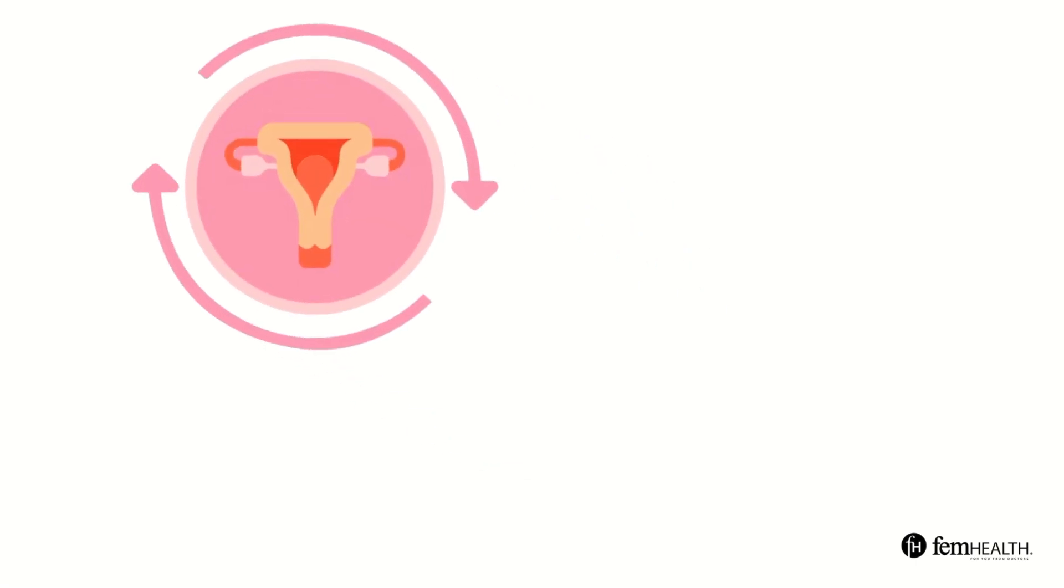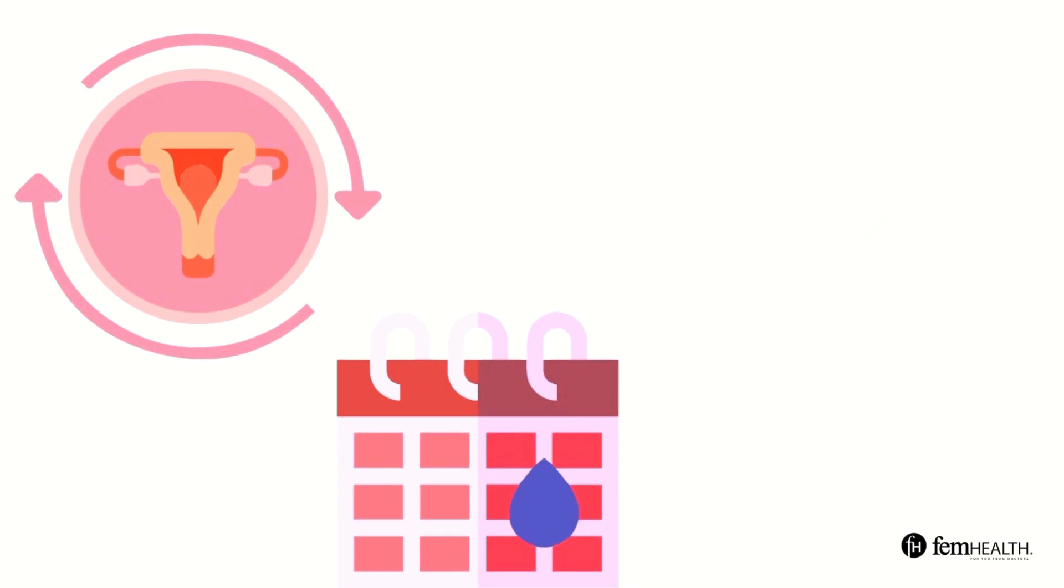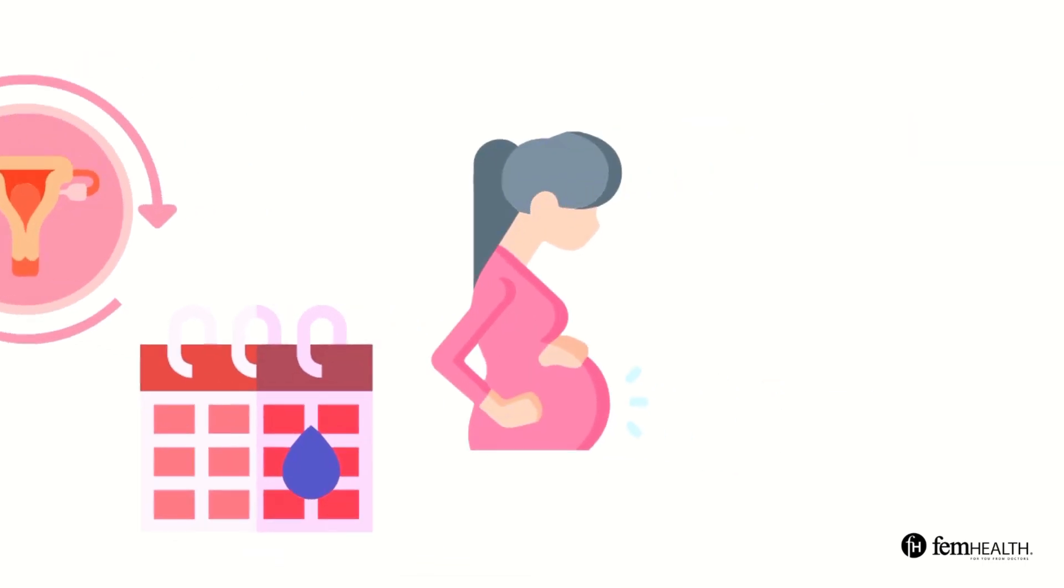The menstrual cycle is a natural process that happens every month. It prepares the body for a possible pregnancy and it is controlled by hormones.